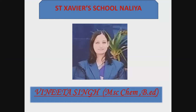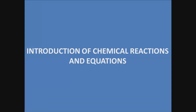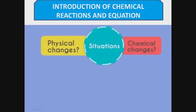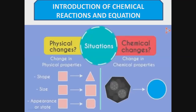Our first chapter is Introduction of Chemical Reaction and Equation. There are two types of changes: physical and chemical. Physical changes are basically changes in the physical property of any matter — it may be in shape, size, appearance, or state. Chemical changes are changes in a chemical property. When one or more atoms of any matter combine together and form a new compound, then a chemical change occurs.